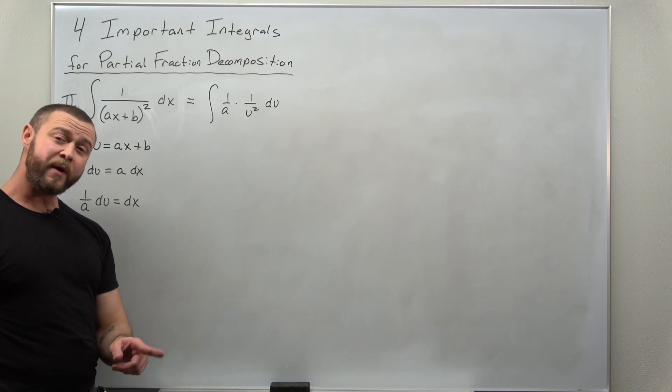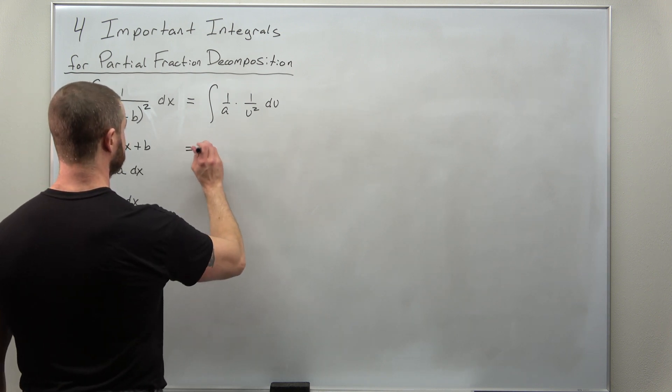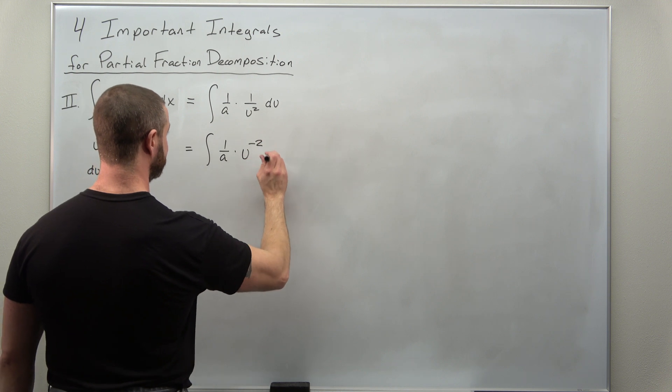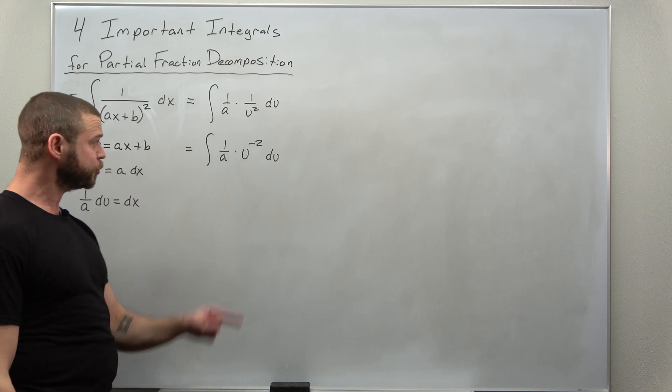Now this one, we can evaluate it easily with the power rule. If we rewrite this as (1/a) times u to the negative two. And from here, it should be very straightforward to integrate it using the power rule. We're going to add one to that exponent and then divide by the new power.